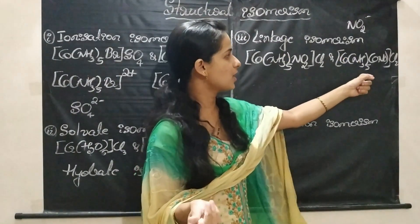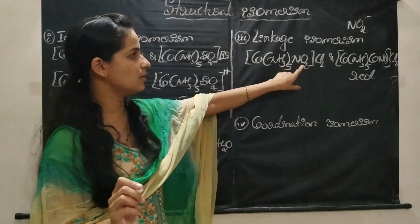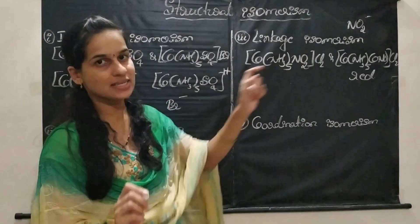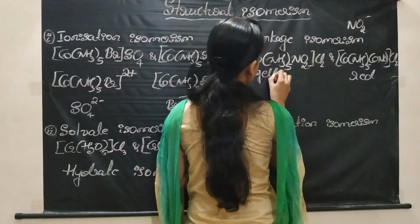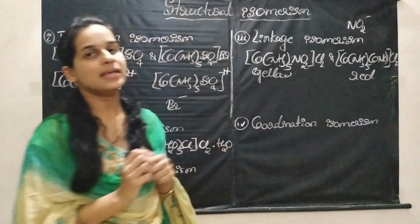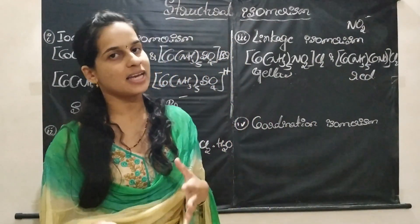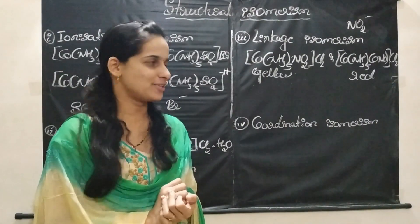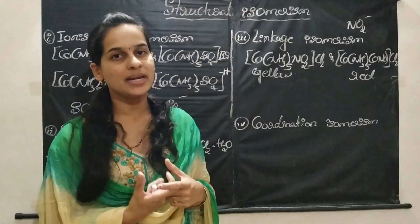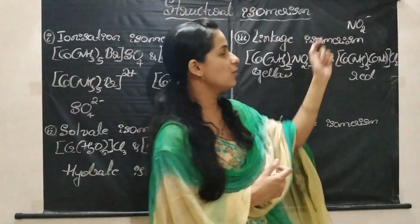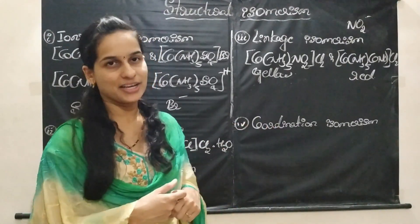Due to the difference in binding, the physical properties are different. For instance, when the nitro-N is the ligand, the complex is yellow in color, whereas the other linkage isomer is red in color. Due to the difference in chemical bonds, their physical and chemical properties also differ. The key point in linkage isomerism is the ambidentate ligands — examples include NO2⁻ and SCN⁻.